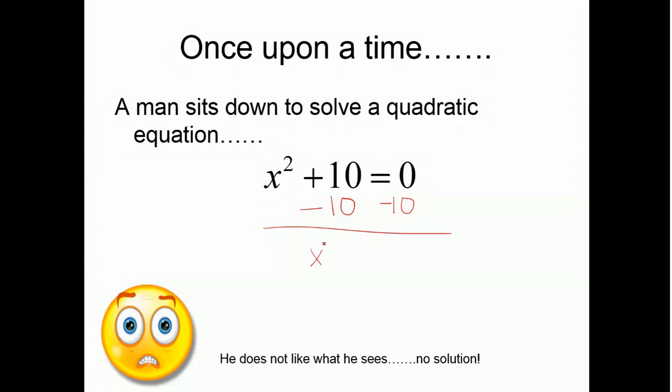And he did x squared equals the square root of negative 10, and then he'd square root both sides. Well, he tried that, and that didn't work. And he didn't like what he saw. There was no solution. And he knew there was supposed to be two solutions. So, what can you do?